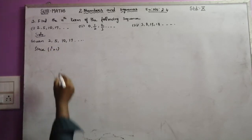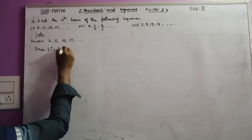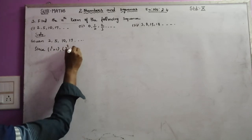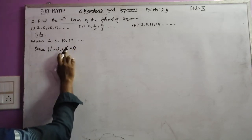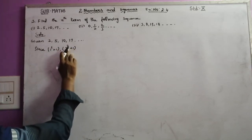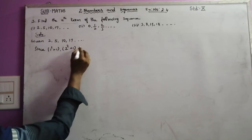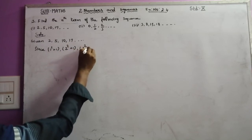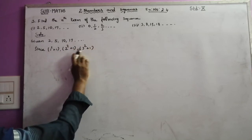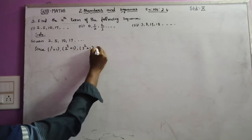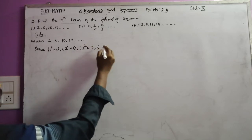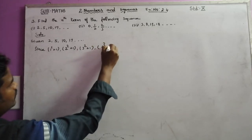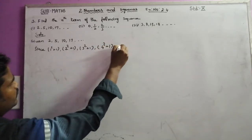Next term: 5 equals 2 squared plus 1. Next term: 3 squared plus 1. Next term: 4 squared plus 1.